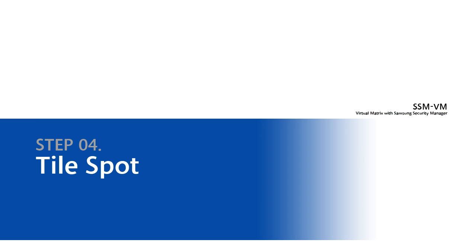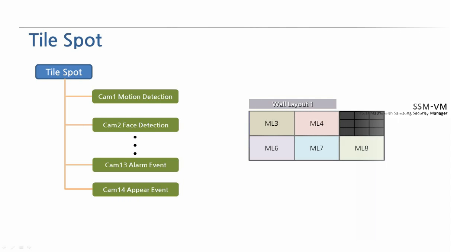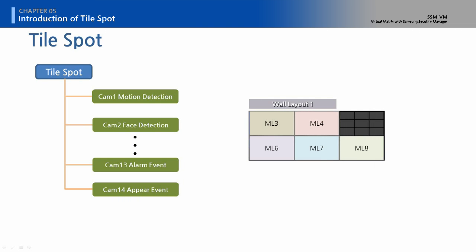Step 4: Tile Spot. It displays camera images one by one in order on the assigned split screens of the wall monitor on which the event-occurred cameras are assigned.